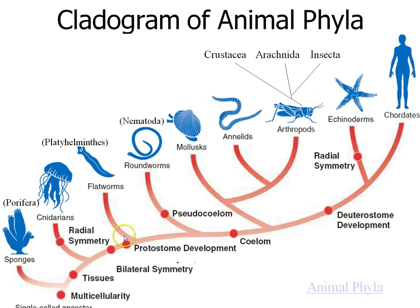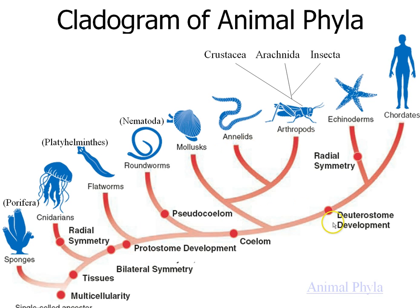Then we have protostomes — everything after this point up to deuterostome. Coeloms are body cavities, so everything after the coelom branch has a body cavity. Roundworms have a false body cavity. Mollusks, annelids, and arthropods are all protostomes. Deuterostomes include only two phyla: the echinoderms and the chordates — the starfish and the animals with a backbone.